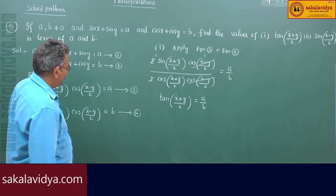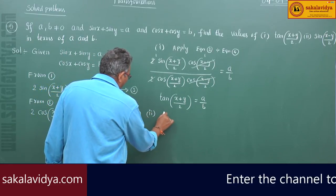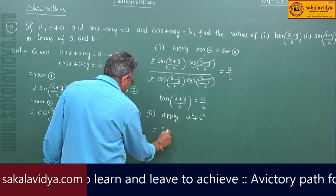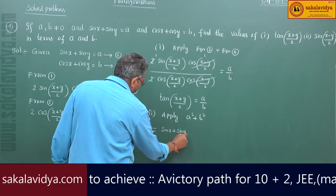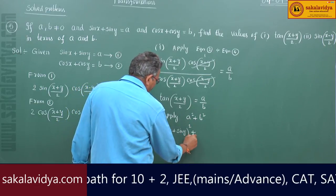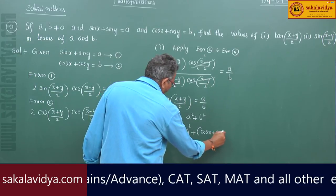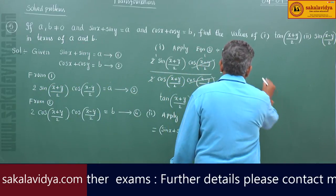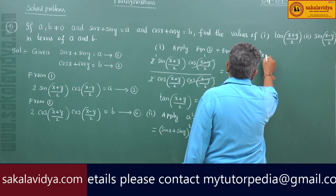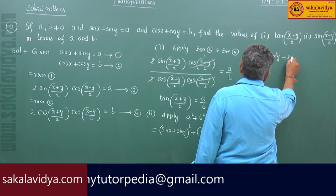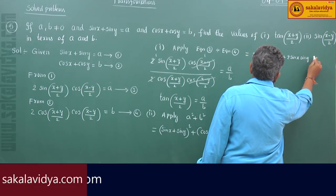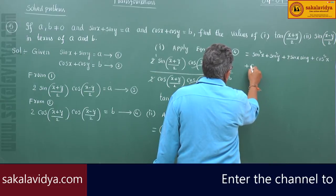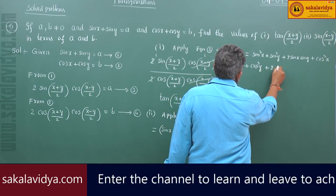Now let us find out the second one. Apply a squared plus b squared, that means (sin x + sin y)² + (cos x + cos y)². Expanding, this equals sin²x + sin²y + 2 sin x sin y + cos²x + cos²y + 2 cos x cos y.